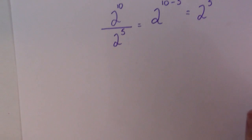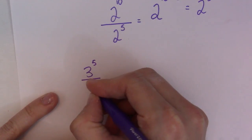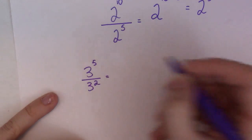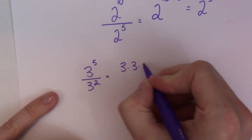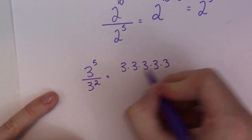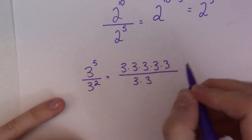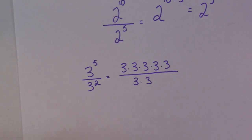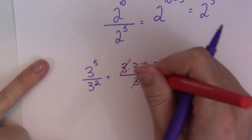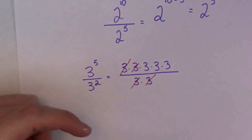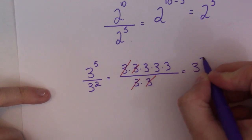Let me show you why that works. If I had 3 to the 5 divided by 3 to the 2, I could write that out in an expanded form. So 3 times 3 times 3 times 3 times 3, all divided by 3 times 3. Now if I really wanted to, I could cancel. Since I have a 3 on top and a 3 on bottom, I could cancel. And you can see what I get left with — I get left with 3 threes. So that would be the same as 3 to the 3.